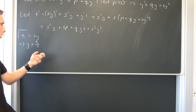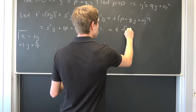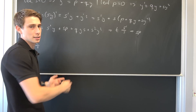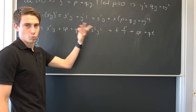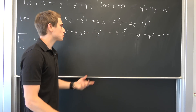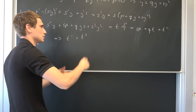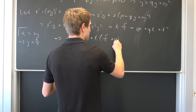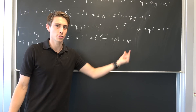Now we distribute s into everything: s prime times y plus s times p plus q times y times s plus s squared y squared. Since t equals s times y, if s is not zero then y equals t over s. Plugging those in we get: t times s prime over s, plus s times p, plus Q times t, plus t squared. We can factor out t from two of the parts to simplify.